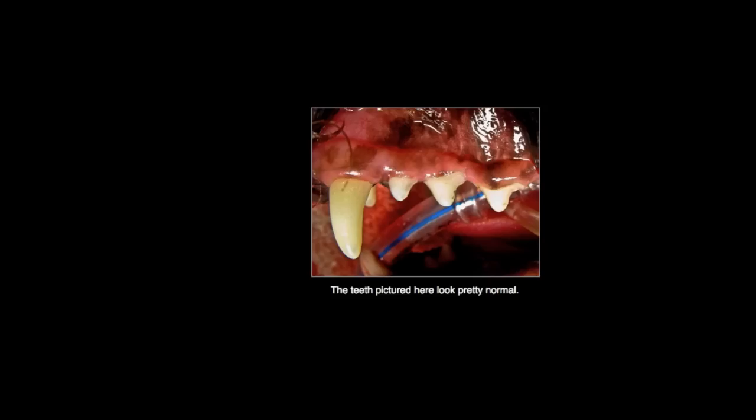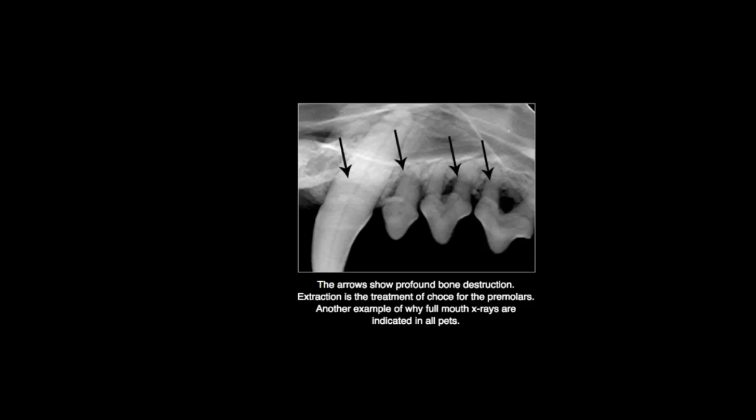Here's another example. This is a very common situation where we don't have a lot of gross pathology, however when we look at the same area radiographically we see that periodontal disease has destroyed a lot of the bone around these tooth roots. This is an excellent image set to explain to clients that the majority of the pathology present with periodontal disease is not something we see — it's actually what we don't see — and it's very effective in gaining compliance with periodontal pathology.